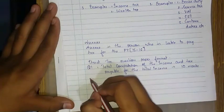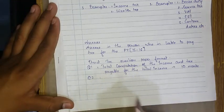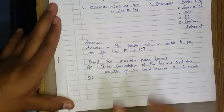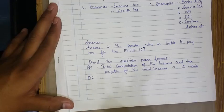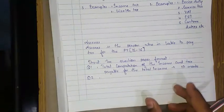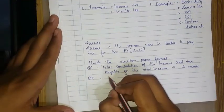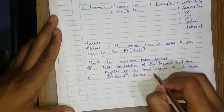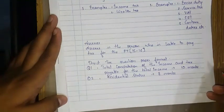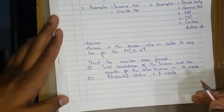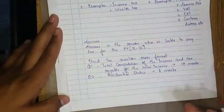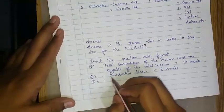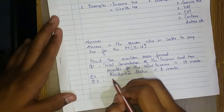Question number two: it is not like that whatever question number I quote, that chapter will only come in that question. It may be jumbled, but these chapters will come. There are seven questions, one to six. Whichever chapter I say will have to come, it may be jumbled but it will come. Residential status, eight marks. Question number three: capital gain, eight marks.